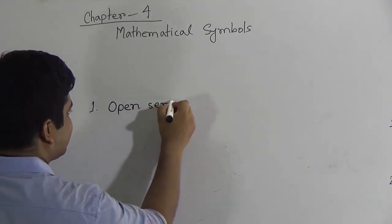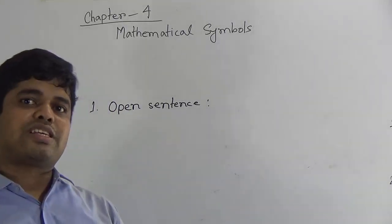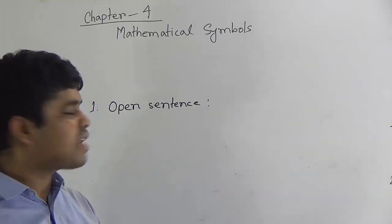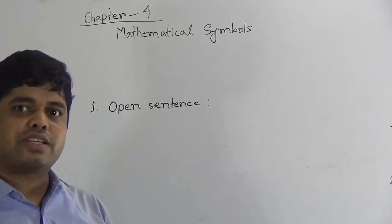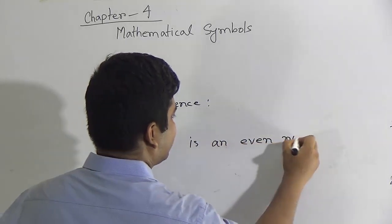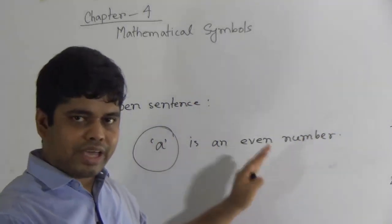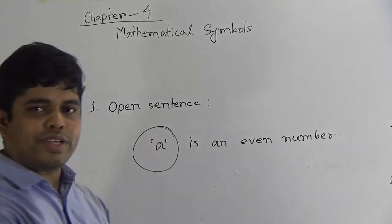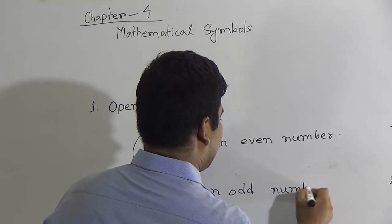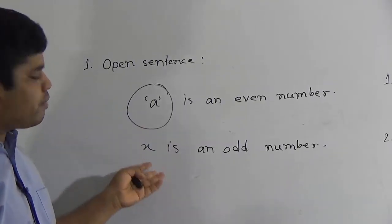Open sentence. What do you mean by open sentence? When we cannot determine whether a sentence is true or false, then that type of sentence is called an open sentence. For example: 'a is an even number.' We do not know the value of a, so we cannot determine if it is true or false — this is an open sentence. Another example: 'x is an odd number.' Here x is an unknown value, so we cannot determine it. It is also an example of an open sentence.